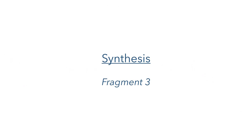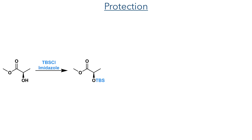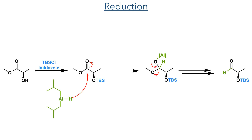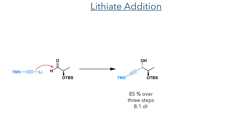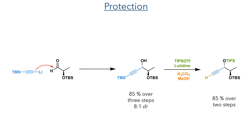To synthesise fragment 3, methyl D-lactate was first TBS-protected and then the ester was reduced using DIBAL. This adds a hydride to form an aluminium-coordinated tetrahedral intermediate that then eliminates methanol upon workup to form the aldehyde. This aldehyde was then reacted with lithium TMS-acetylide. This addition is stereoselective, as it is driven by the steric bulk of the TBS group. The alcohol formed by this reaction was then protected using TIPS-triflate, and the TMS group was hydrolyzed using potassium carbonate and methanol.